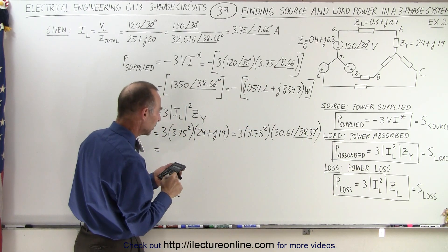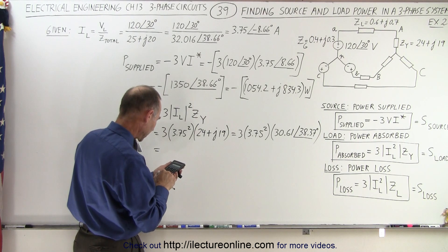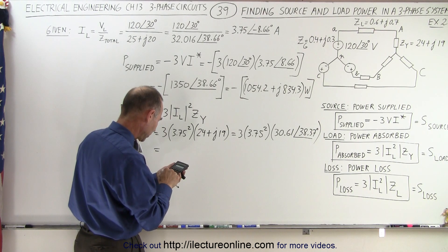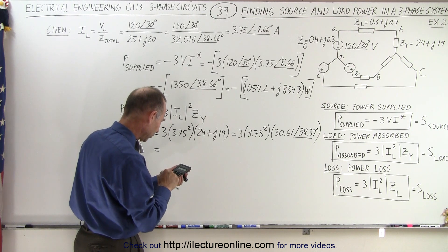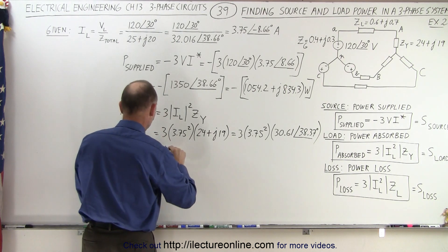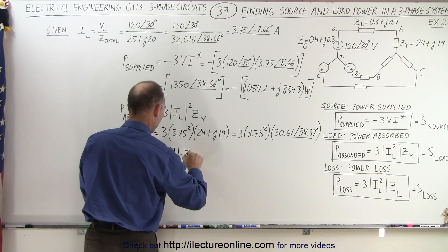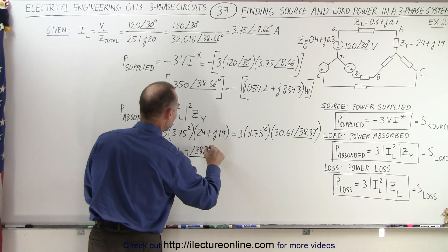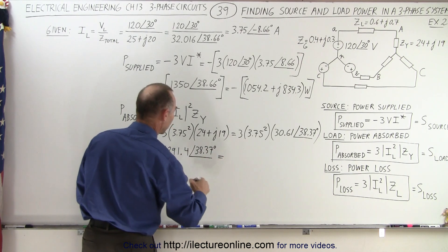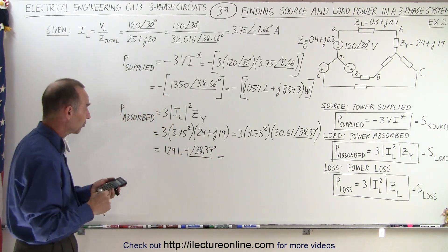So this would be equal to, now we're ready to multiply. So we have three times 3.75 squared times 30.61. That gives us 1291.4 with a phase angle of 38.37 degrees. And now we can convert that into real imaginary parts.